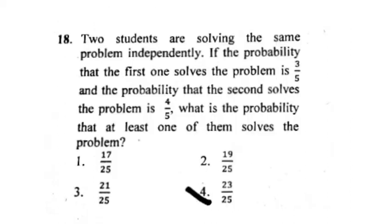This question is about two students solving a problem independently. They are asking about the probability that at least one of them solves the problem. The right option is 23 upon 25, option number 4.